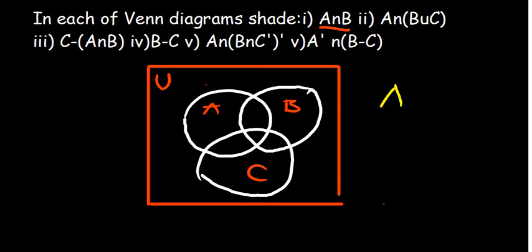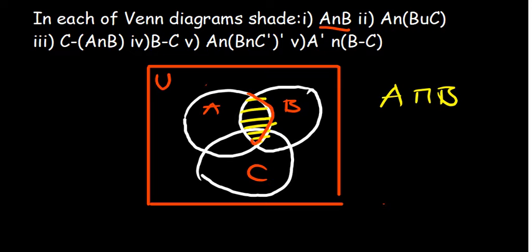So we have A intersection B. What does that mean? It requires us to shade the region that is common between A and B. If you are to shade that region, what you're going to have is this part, because that is the region that is part of both A and B. You look at the point where they are intersecting — basically, this is their intersection point. This region is part of B and it's also part of A. So that is how you answer the first one.